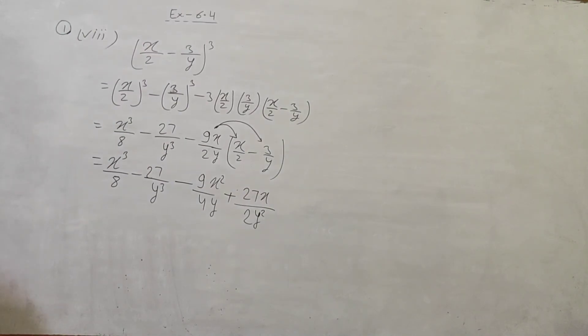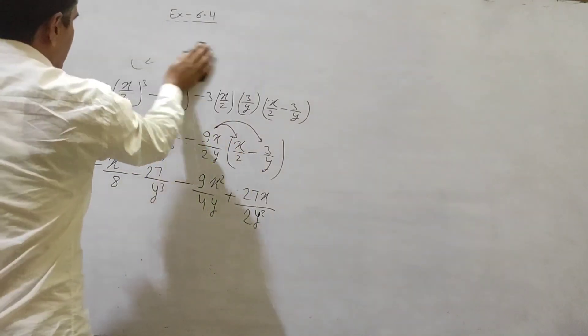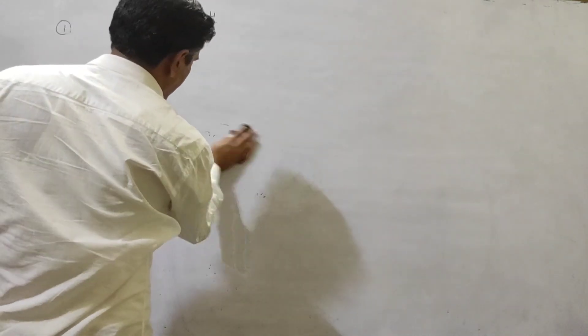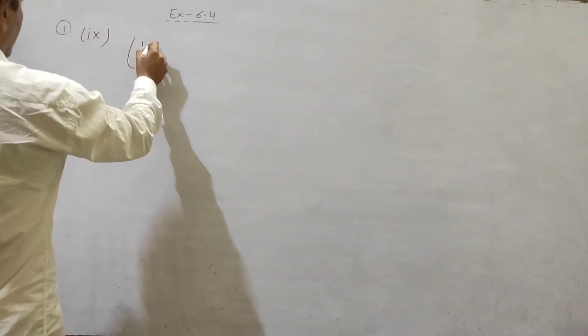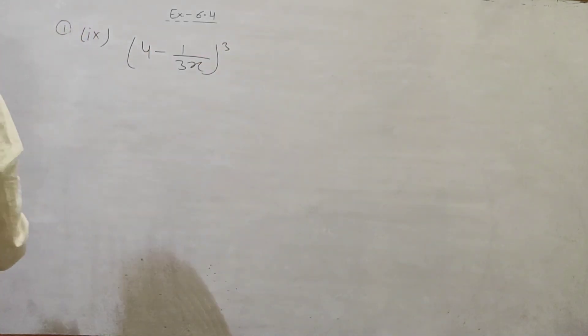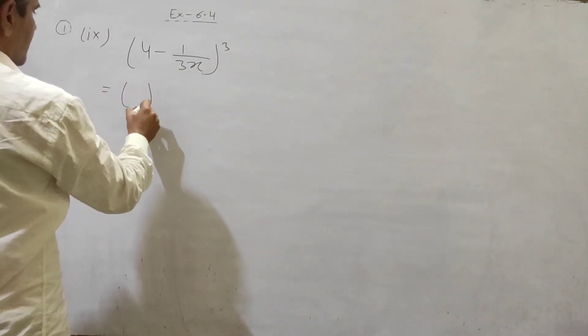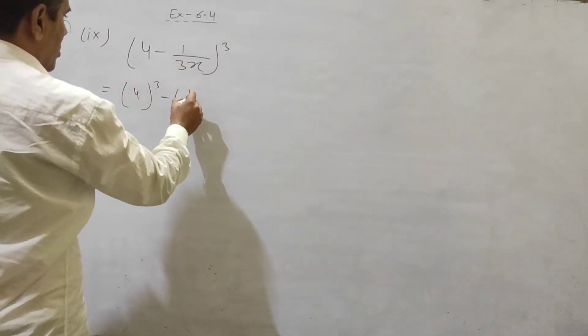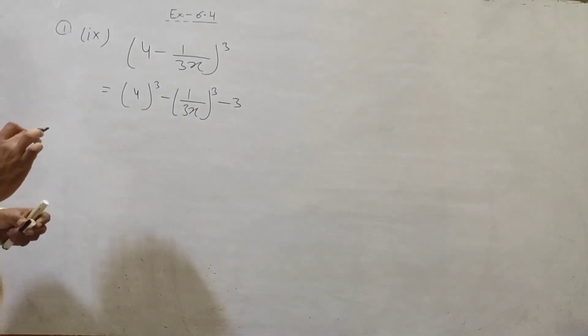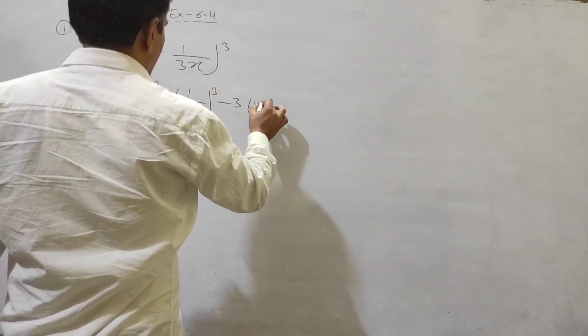Ninth part of the question. Ninth part, 4 minus 1 by 3 x all cube. A cube, cube of 4, minus B cube. B kya hai? 1 by 3 x hai. Video complete dikhi hai. All question is sarah se video se aap complete dikhi ho na, 1 by 1. Toh, phir topic completely clear ho jata hai. Minus 3 AB.